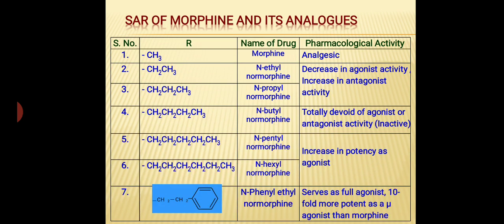In the table, the second column lists various substituents and the fourth column represents different types of pharmacological activity. If a methyl group is present at the nitrogen, the drug is morphine with analgesic activity. If ethyl or propyl moieties are present, there is a decrease in agonist activity and increase in antagonistic activity. If a butyl moiety is present, the compound is totally inactive. If we increase further to pentyl or hexyl groups, there is an increase in potency as an agonist. And with a phenylethyl moiety, a more potent mu agonist compound is obtained.